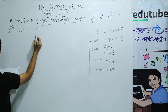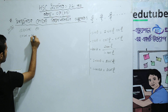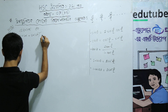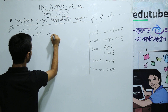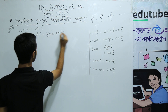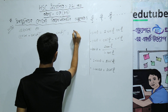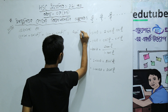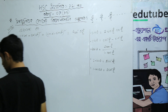We will have a problem: cos alpha plus cos beta, whole square, plus sin alpha minus sin beta, whole square, equal to 4 cos square of alpha plus beta by 2.